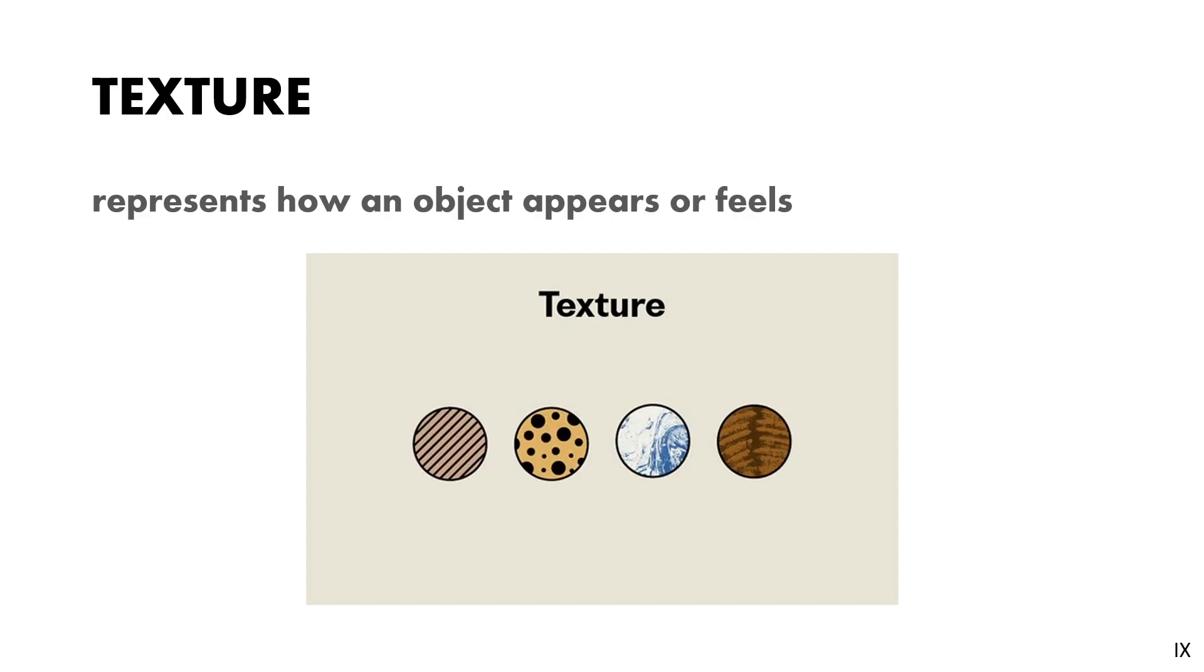Last element of design is texture. Texture represents how an object appears or feels. There are two types of textures. First one is tactile texture. This refers to the immediate tangible feel of a surface, means how any object or surface feels when you touch it. Second is visual texture. Visual texture refers to the visual impression that texture produces to the human eye. If you consider a surface of rock, the tactile texture of the rock will be rough, but visual texture of the rock is just what you see.